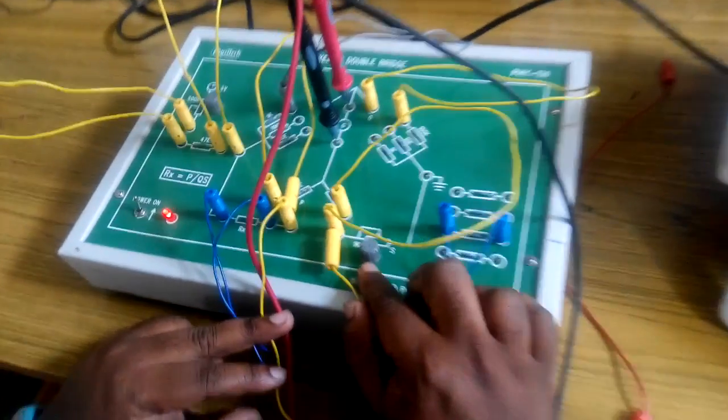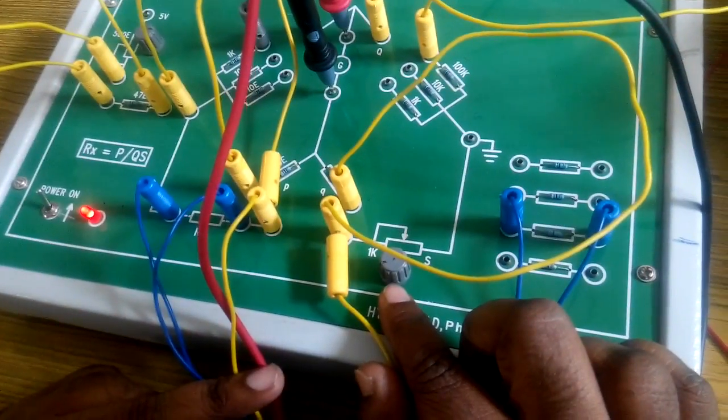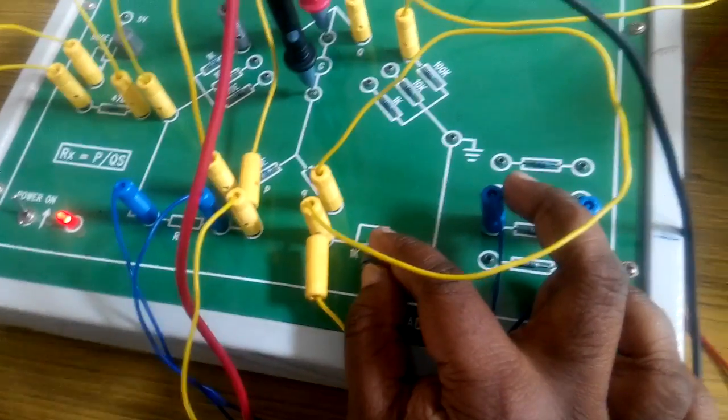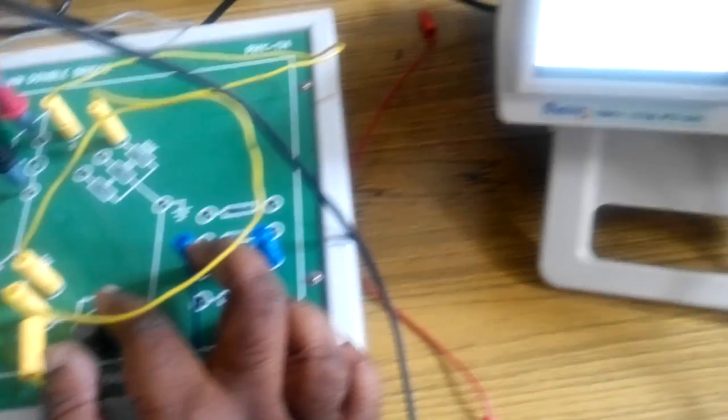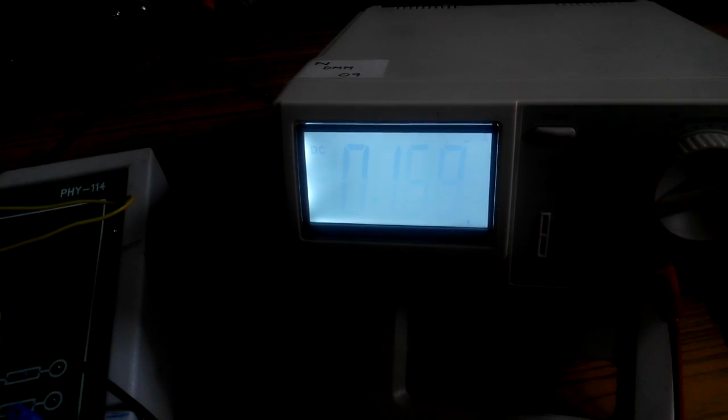We have a potentiometer over here with a range of 10 to 1 kilo ohms. The potentiometer is adjusted such that the deflection in the galvanometer is 0uA.